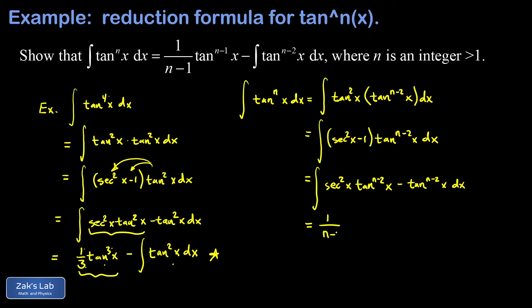So I have a one over n minus one tangent to the n minus one of x and then minus my leftover piece, which is the integral tangent to the n minus two x dx. And I don't do proofs very often on my channel. So I'm not going to miss the opportunity to say QED because I finished my proof and we're done.